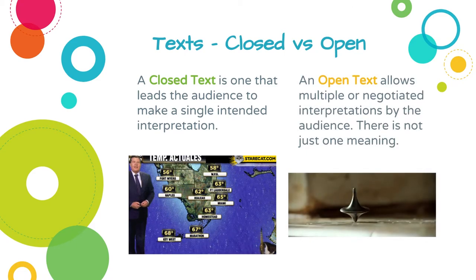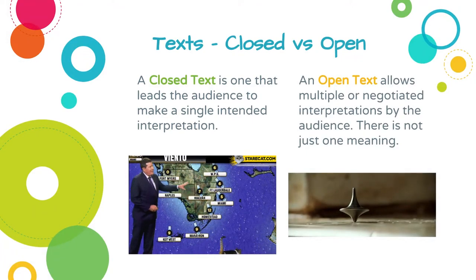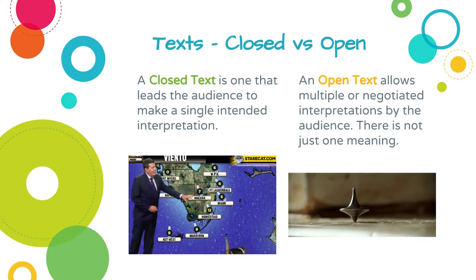Opposite to that is an open text, which allows multiple or negotiated interpretations by the audience — there is not just one single meaning. An example might be a film you see with friends and interpret completely differently to how they do. Inception does this: some people watch it and think the character is still in a dream, while others think the token definitely moved. So we can have different interpretations if the text allows or invites us to do so.